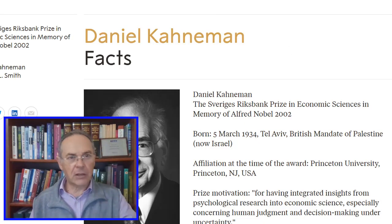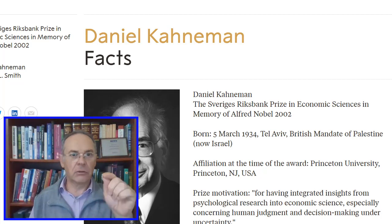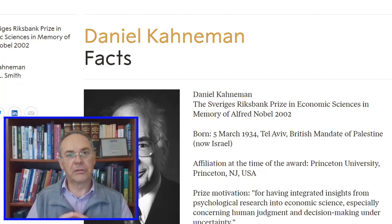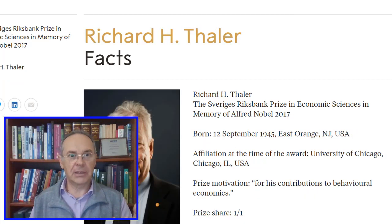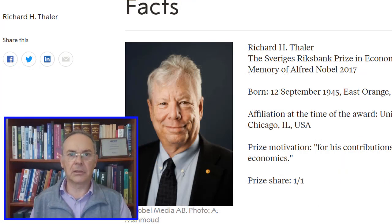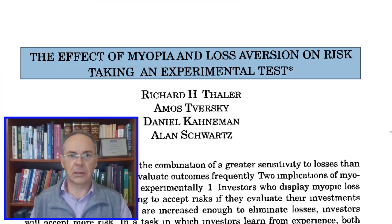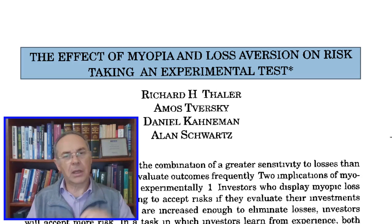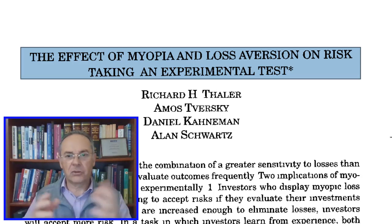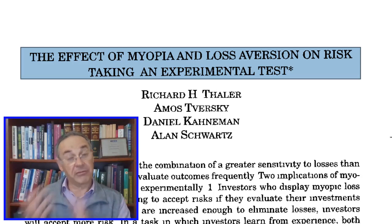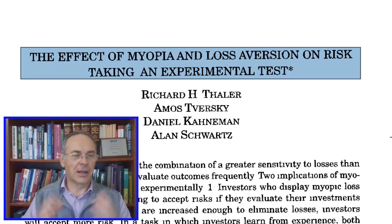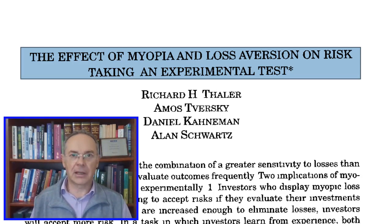Now we're going back to the interaction of economics, psychology, and decision making. Daniel Kahneman received the Nobel award for his work on behavioural economics, which has been taken up by Richard Thaler, who received the award in 2017. Amos Tversky also did a lot of work together with Kahneman. They looked at the effect of myopia and loss aversion on risk taking, challenging the idea that rational people treat gains and losses symmetrically. They found people react differently to losses compared to wins — an asymmetric, lopsided approach — which helps us understand risk behaviour in finance and other areas.